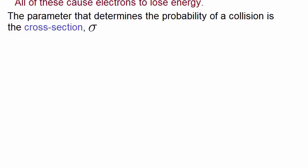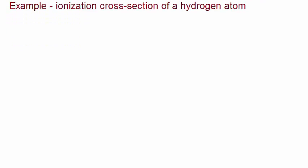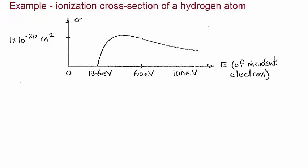Let's pick on an example to see what this means. Let's consider the ionization of a hydrogen atom. This is a plot of the cross section sigma on the y-axis versus the electron energy on the x-axis. As you can see, the cross section starts to become non-zero for energies greater than 13.6 electron volts, because that is the minimum ionization energy for a hydrogen atom.